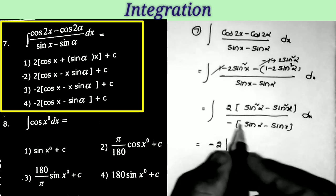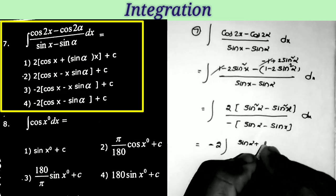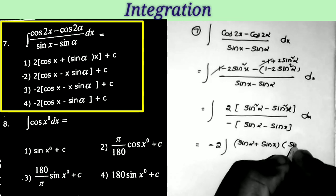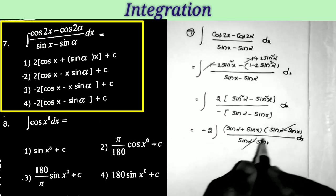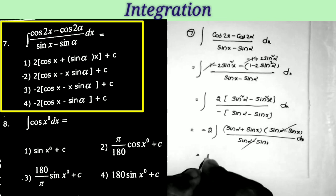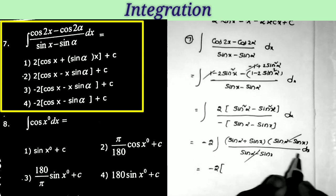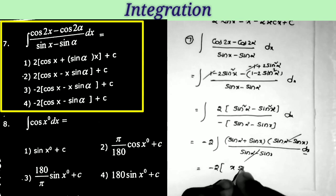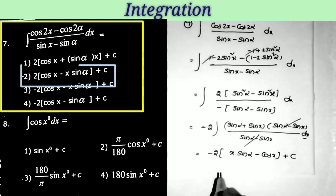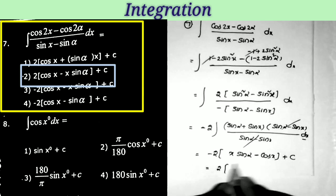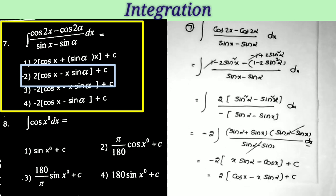Writing −2 as the constant before the integral. The numerator 2(sin²α − sin²x) = 2(sin α + sin x)(sin α − sin x) by a² − b² identity. The denominator factor (sin α − sin x) cancels. Now integrating: −2 times [∫sin α dx + ∫sin x dx] = −2[x·sin α + (−cos x)] + c = −2x·sin α + 2cos x + c = 2(cos x − x·sin α) + c, which is the second option.